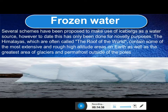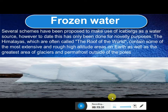Frozen water is found in the Himalayas and polar regions. Although it is difficult to use because of the frozen conditions and very low temperature, this water is highly valued for its purity. Comparatively, the cost per liter of this water is very high compared to normal water sources, because it has a very good mineral content and purity, and is not subject to the impurities found in other surface and groundwater sources.